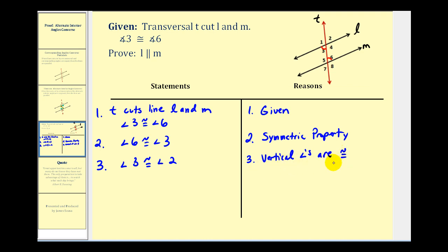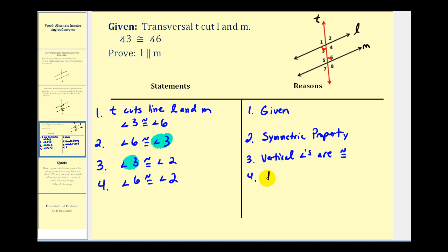We could also say by definition of vertical angles, or something similar to that. Now you can probably see why I used the symmetric property in step two. If we have angle six congruent to angle three, and angle three congruent to angle two, we can use the transitive property to state that angle six would be congruent to angle two. In order to apply the transitive property, we have to have these congruent angles linked: angle six is congruent to angle three, and angle three is congruent to angle two, so they connect. The justification here is the transitive property.